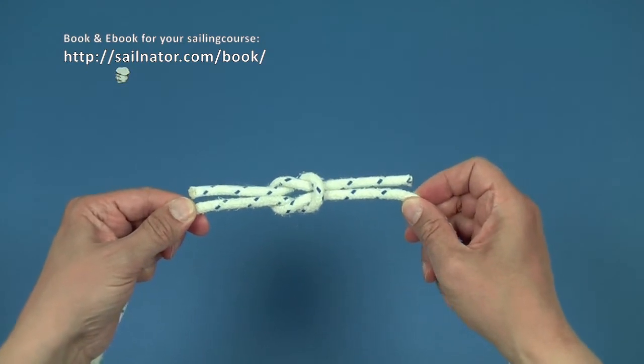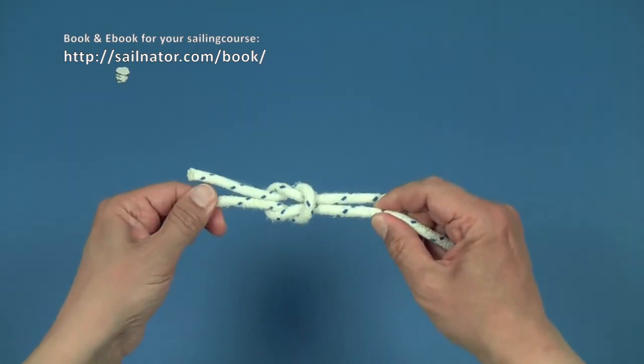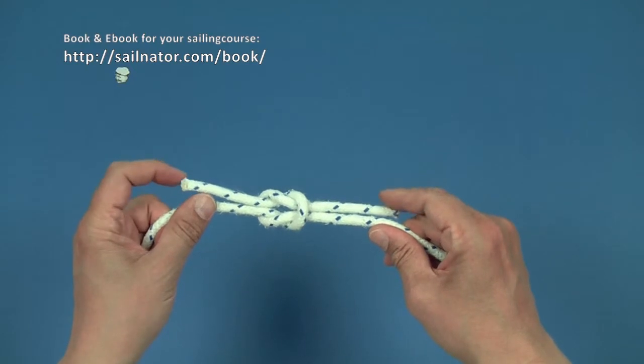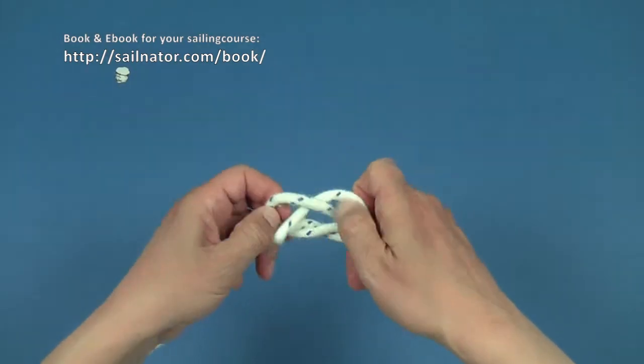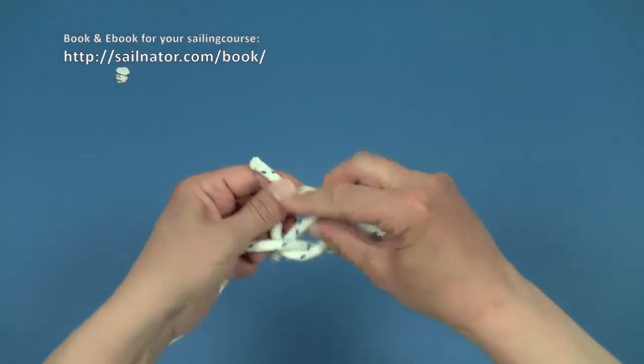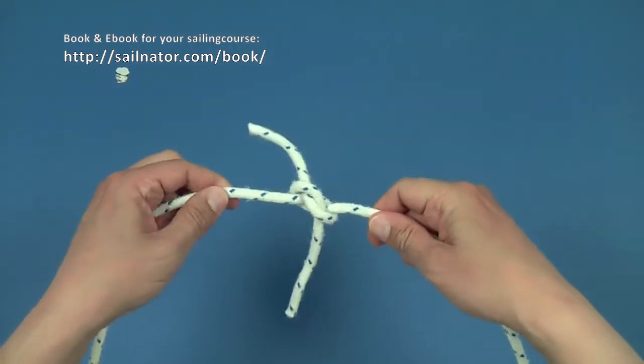The knot is tied right when both ends of the lines are on the same side. If not, it is not the square knot. This one opens up easily.